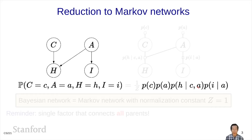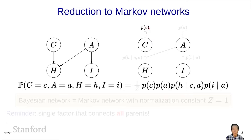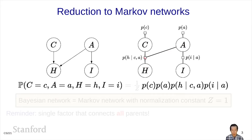These local conditional distributions are non-negative quantities, so they can be interpreted as factors in a factor graph. In the factor graph, we have the same set of variables, and for every variable we have a factor corresponding to its local conditional distribution: probability of c, probability of a, probability of h given c and a — which connects c, a, and h — and probability of i given a. In a Markov network, we multiply all the factors together and divide by a normalization constant z to make the product sum to 1.